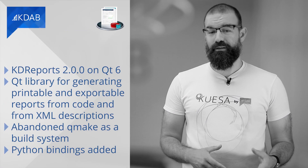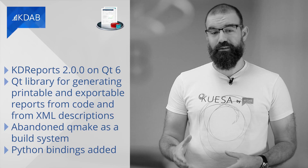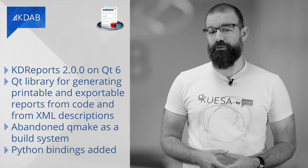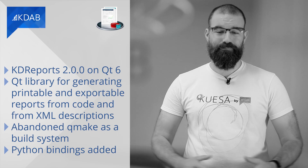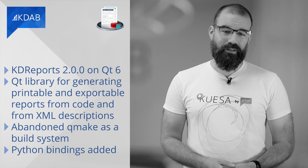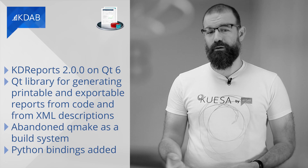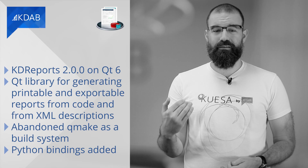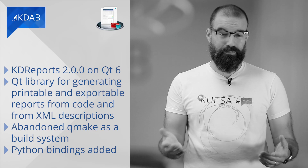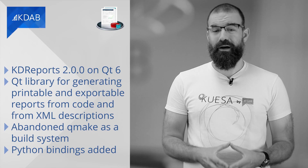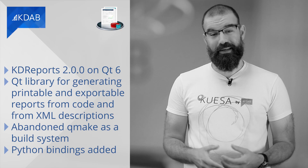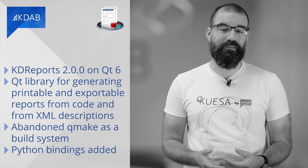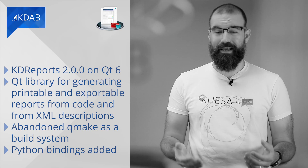The new version of KdReports, a Qt library for generating printable and exportable reports from code and from XML descriptions, is ready for Qt 6. The latest release, 2.0.0, can be co-installed with Qt 5. Further, it has abandoned Qmake as a build system. Last but not least, Python bindings for KdReports have been added. You can find more details in the release notes and on GitHub.